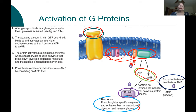When it's time to deactivate cyclic AMP, phosphodiesterase inactivates it. When it's inactivated, no more protein kinases are activated, no more glucose is broken down, and that process ends.